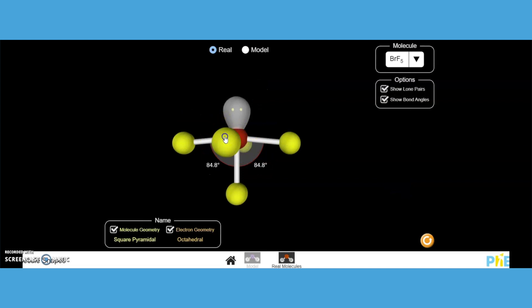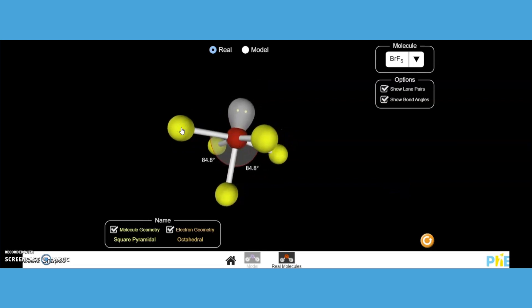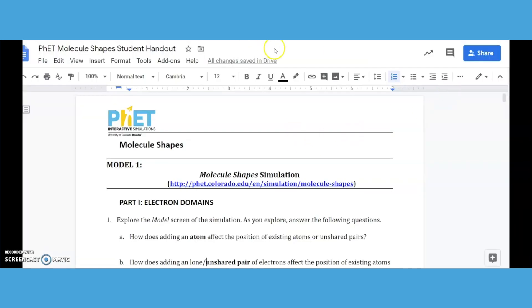I just took bromine heptafluoride here, and if you notice, here is an unshared pair. Down at the bottom, molecular geometry is square pyramidal, but the electron geometry is octahedral because of that potential bonding site. They develop that claim with some evidence to prove it, and they can verify with reasoning in terms of the electron domains, the bond angles, and how many unshared pairs are present. That kind of walks them through this document.